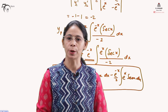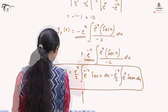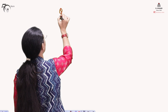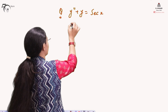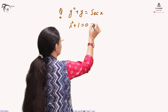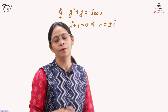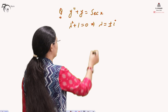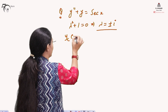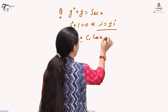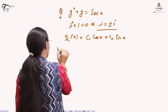If we make a small change to the given differential equation, the entire solution changes. Taking instead y'' + y = sec(x), the characteristic polynomial gives λ = ±i. This is case three of the complementary function, where the roots are complex conjugates. Since there is no real part, yc(x) = c₁cos(x) + c₂sin(x).